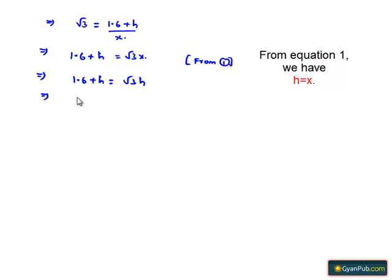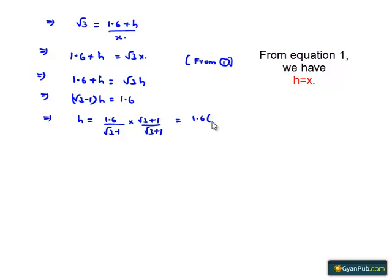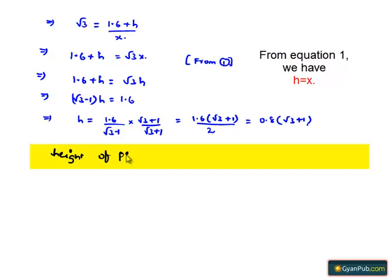That implies √3·H − H = (√3 − 1)·H = 1.6. Therefore H = 1.6 / (√3 − 1). Multiplying and dividing by (√3 + 1) to rationalize: H = 1.6·(√3 + 1) / ((√3)² − 1²) = 1.6·(√3 + 1) / 2 = 0.8·(√3 + 1). Therefore, the height of the pedestal is 0.8(√3 + 1) meters.